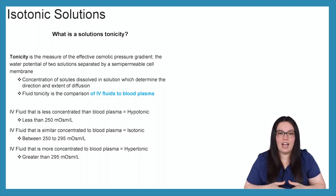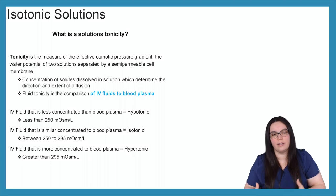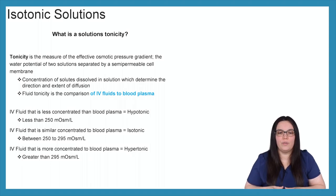If we have an IV fluid that is less concentrated than our blood plasma, then we have a hypotonic solution, less than 250 mOsm/L. If we have an IV fluid that is a similar concentration to blood plasma, then we have an isotonic solution, usually between 250 and 295. And lastly, if the IV fluid is more concentrated than our blood plasma, then we have a hypertonic solution that is greater than 295.